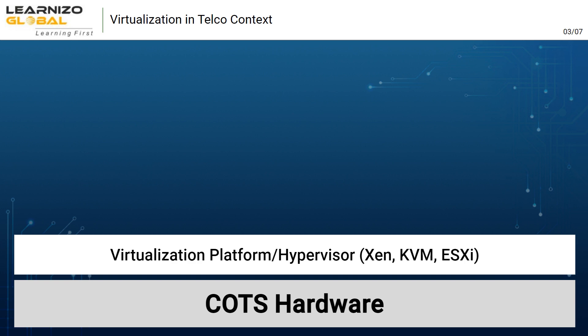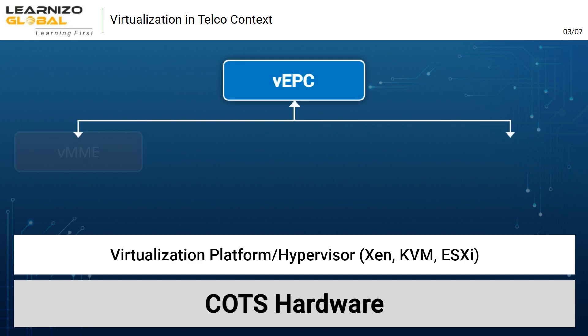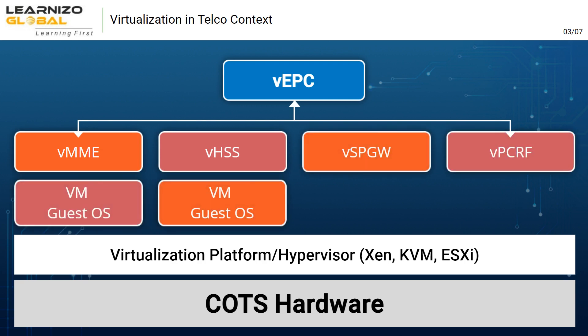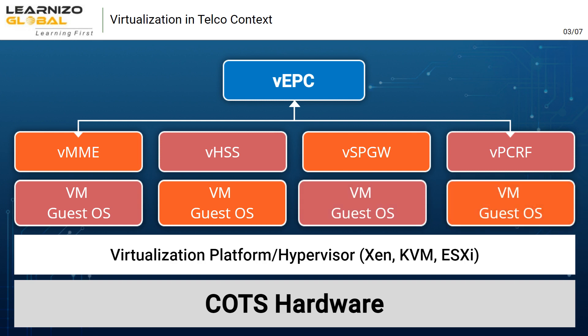Then they moved to containerized environments gradually. Now all the network nodes like MME, HSS, and PCRF can be deployed as VNFs — that is, Virtual Network Functions — and are now referred to as vMME, vHSS, and vPCRF.